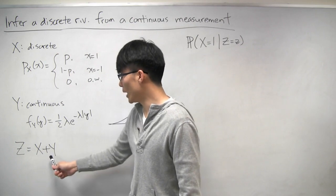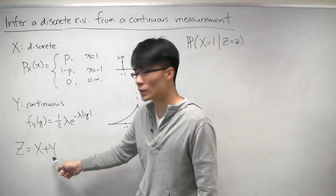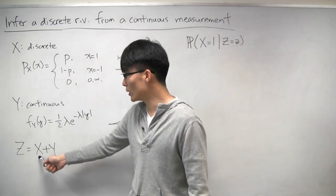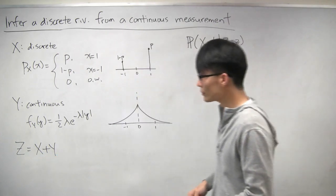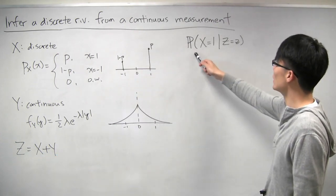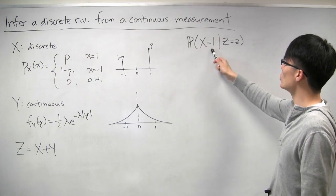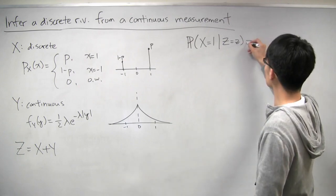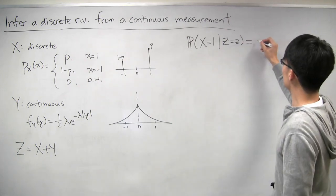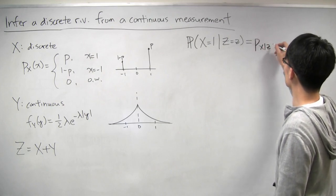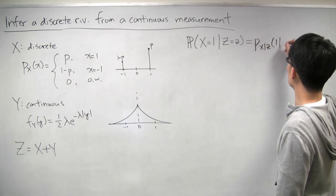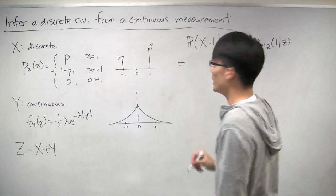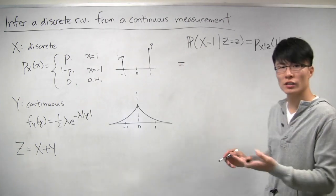Because x is discrete and y is continuous, z is also going to be continuous. So our measurement is z, which is continuous, and we want to infer x, which is discrete. The problem asks us to find the probability that x equals 1 given that z is some little z — equivalently, the conditional PMF of x given z evaluated at 1, conditioned on little z. Now let's apply the correct variation of Bayes' rule.